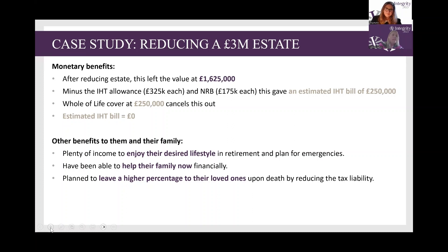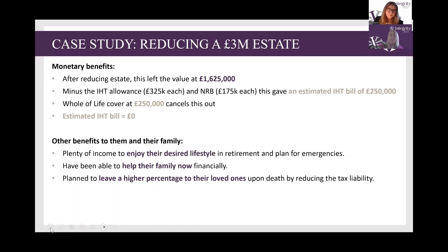If they were then to put in place a whole of life cover policy paying out £250,000 in trust on the second death, that would pay the remaining inheritance tax bill. The benefit of doing that is that the tax bill could be paid with the life cover in full. All of the assets are then inherited by the family — they don't have to think about selling property or cashing in investments to pay the inheritance tax liability. It just avoids that horrible burden of 'what do we do?'